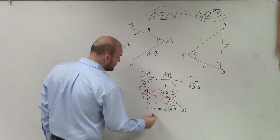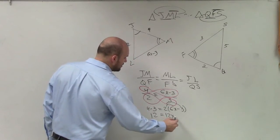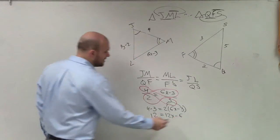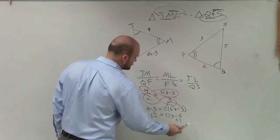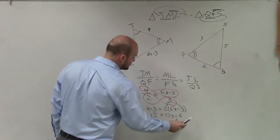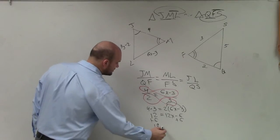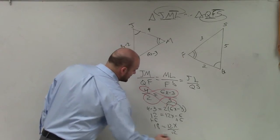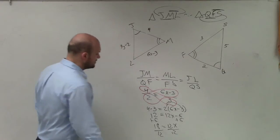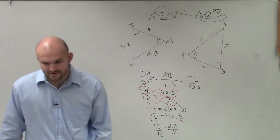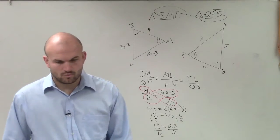So therefore, I have 4 times 3, which is 12, equals 12x minus 6. Add 6, and I get 18 equals 12x. Divide by 12. That's going to be 1 and a half or 1.5.